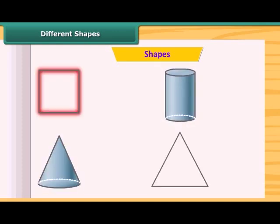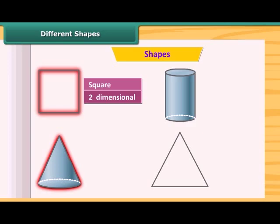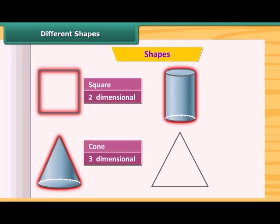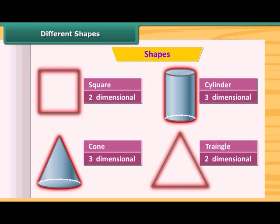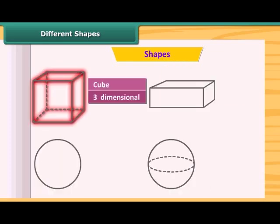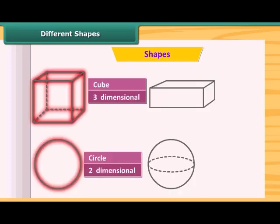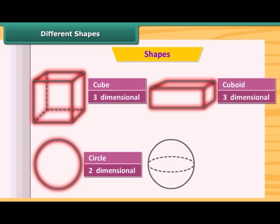This is a square and this is two-dimensional. This is a cone and is three-dimensional. This is a cylinder, also three-dimensional. This is a triangle and this is two-dimensional. Circle, two-dimensional. This is a cuboid and is three-dimensional.